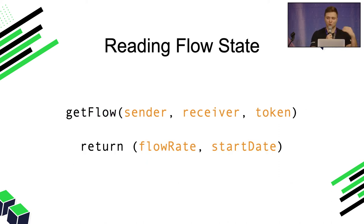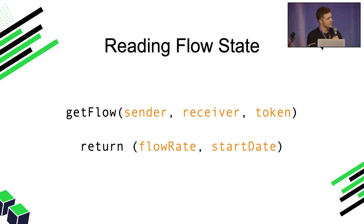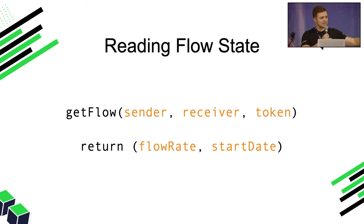The last thing in terms of CRUD functionality is reading data. If you need to get data about a flow, you can call getFlow, pass in the sender, receiver, and token, and it will return the flow rate and the start date of that flow. With that information — because tokens are being sent in real time every second — you can always calculate how many tokens have been sent between two addresses at any given point in time.